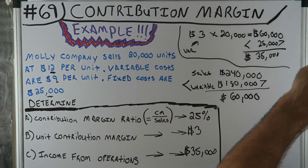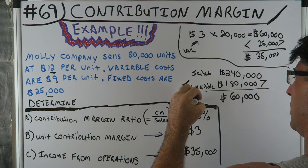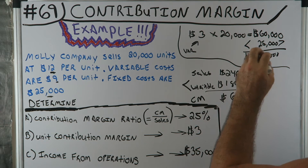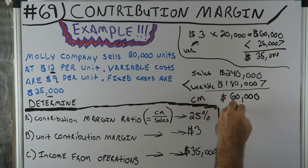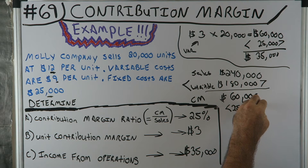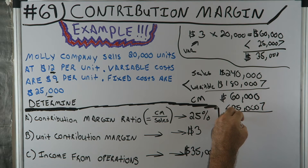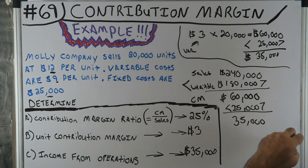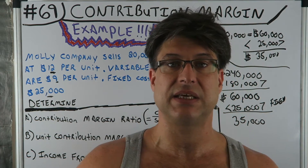$240,000 minus $180,000 gives you $60,000 — that's your contribution margin. Then subtract fixed costs of $25,000, and you get $35,000. So that's two different ways to get the income from operations.